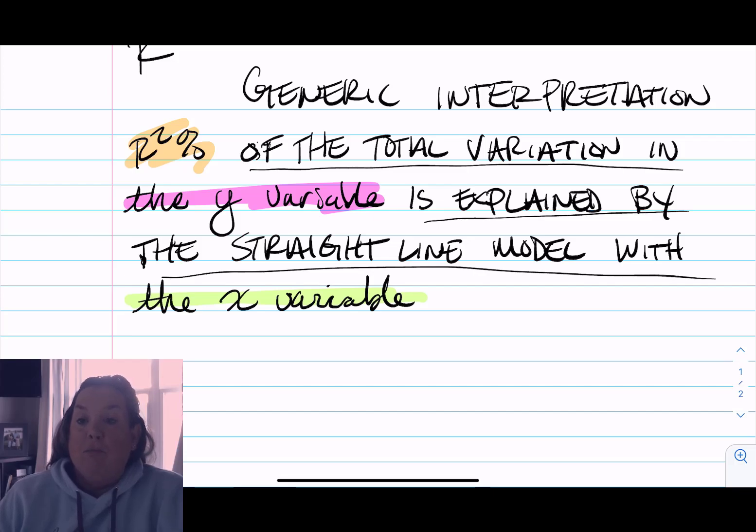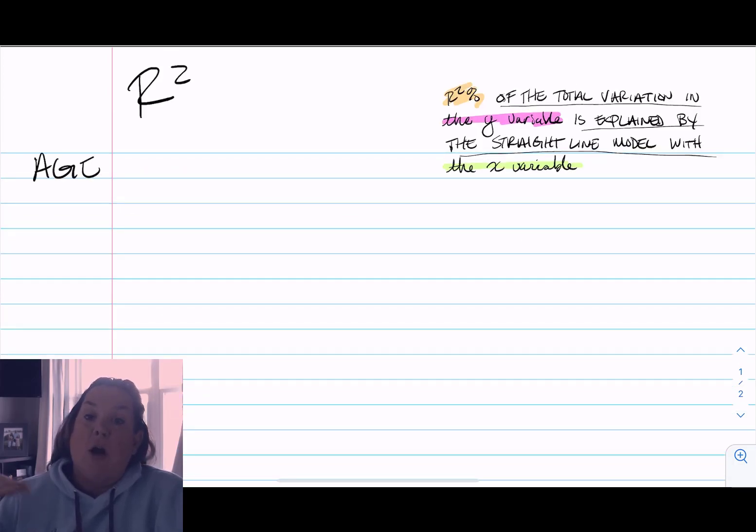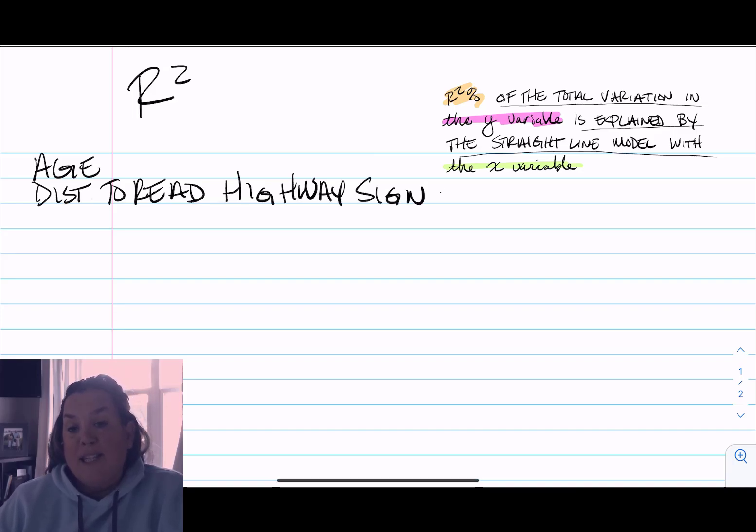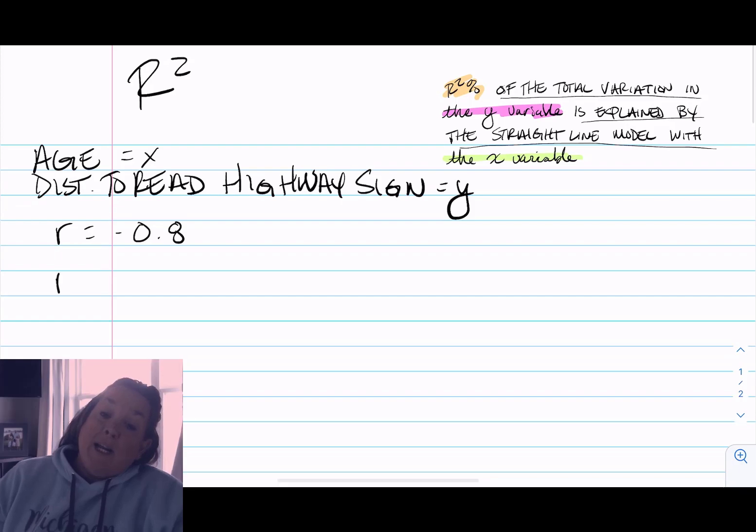Let's talk about age and distance to read a highway sign. This is the example we've been looking at for two quantitative analysis. Age is our x variable, distance to read a highway sign is our y, and we know that has a negative association.